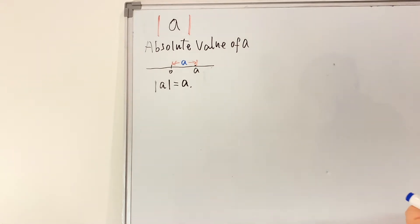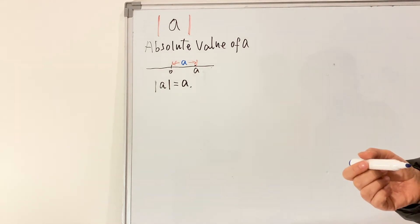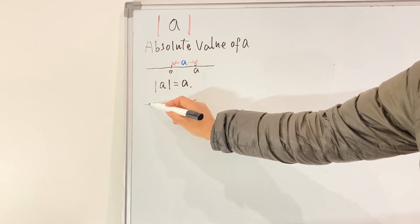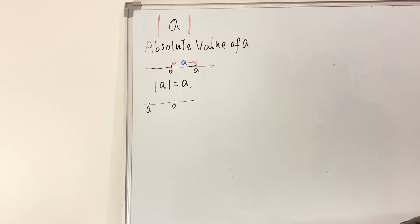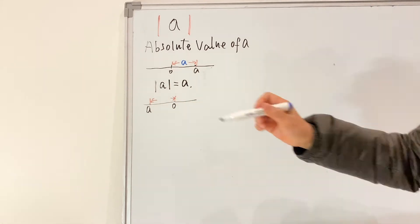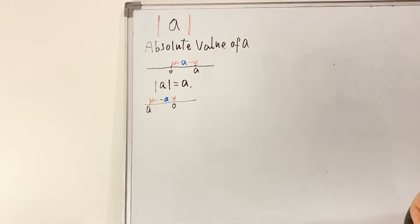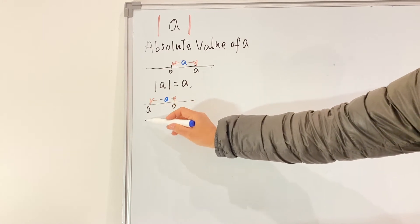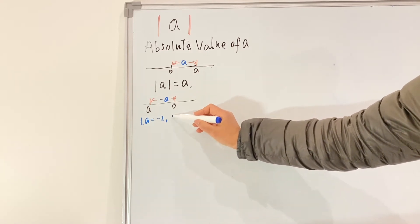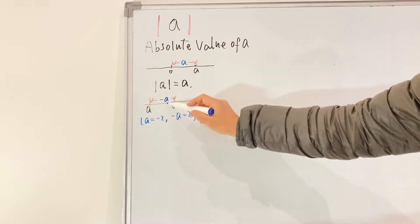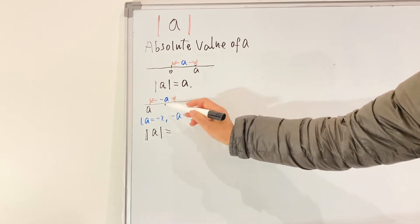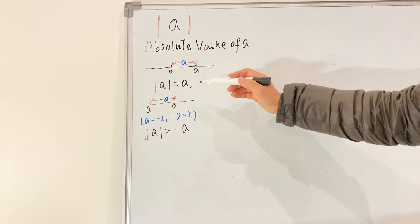But if a is on the other side of the number line, the distance from that number to the origin would be negative a. Why negative a? Because a itself is negative. For example, if a equals negative 2, the distance to the origin would be negative a, which equals 2. So the absolute value of a in this case equals negative a.